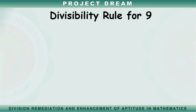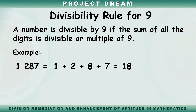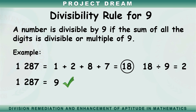Let's have the divisibility rule for 9. A number is divisible by 9 if the sum of all the digits is divisible by or a multiple of 9. The divisibility rule for 9 is the same as for 3 — we need to get the sum of all the digits. Is 1,287 divisible by 9? Let's get the sum of the 4 digits: 1 plus 2 plus 8 plus 7 equals 18. Is 18 divisible by or a multiple of 9? Yes — 18 divided by 9 equals 2. Therefore, 1,287 is divisible by 9.